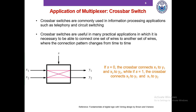Another interesting application of multiplexers is the crossbar switch. Crossbar switches are useful in practical applications where it is necessary to connect one set of wires to another set of wires, where the connection pattern changes with time. They are commonly used in information processing applications such as telephony and circuit switching. If we set S equals to 0, the crossbar switch connects X1 to Y1 and X2 to Y2. However, if we set S equals to 1, it connects X2 to Y1 and X1 to Y2, effectively crossing them over.